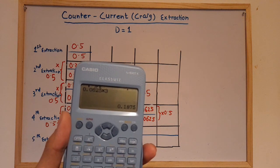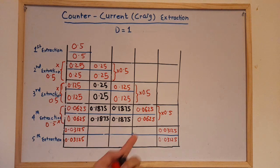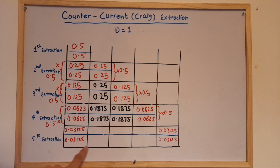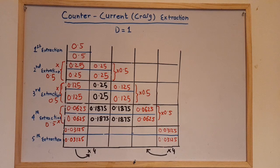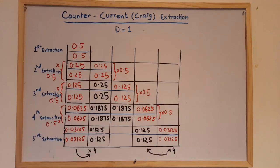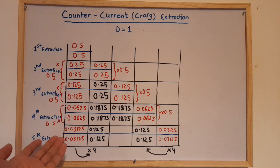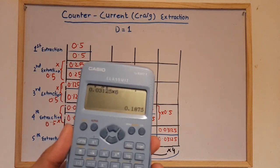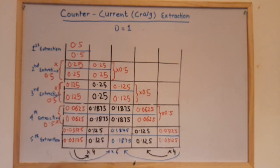For the fifth extraction, 0.0625 multiplied by 0.5 gives 0.03125 on the right-hand side. To get the three middle values, the pattern follows: multiply by 2, then by 3, then by 4. When we multiply by 4, we get 0.125 on both left and right-hand sides. For the remaining middle value, multiply either of these by 6, and we get 0.1875 as the middle value for the fifth extraction.